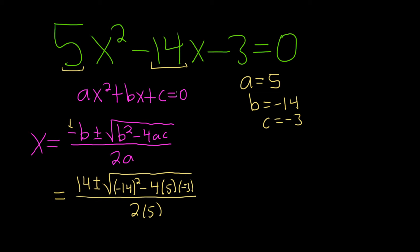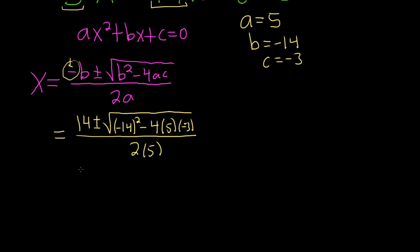Let me just go ahead and check that. So b was negative 14, but there's already a negative here, so it makes it positive. We square it here, and then minus 4ac, so a is 5, c is negative 3, all over 2a, and a is 5. So everything looks pretty good.